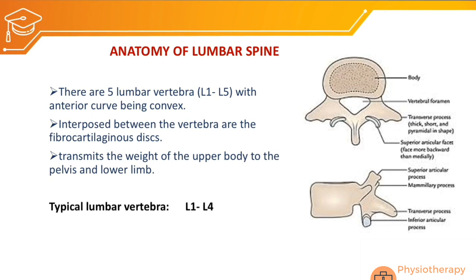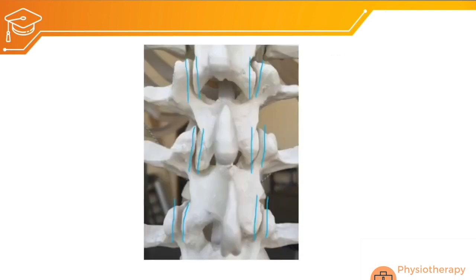Because of this weight-bearing role, the lumbar vertebral body is the largest among all vertebral levels. There are four typical lumbar vertebrae (L1 to L4) and one atypical lumbar vertebra (L5). Focusing on facet joint alignment, as seen in the picture, the facet joint is oriented nearly 90 degrees to the horizontal plane.